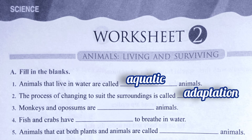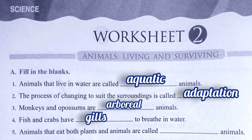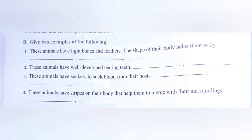Number three: monkeys and opossums are arboreal animals. Number four: fish and crabs have gills to breathe in water. Number five: animals that eat both plants and animals are called omnivorous animals.